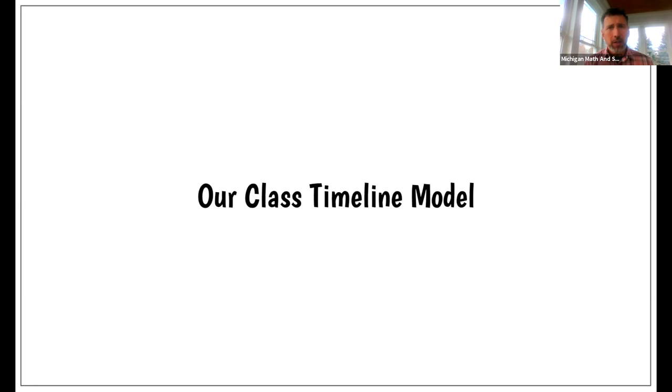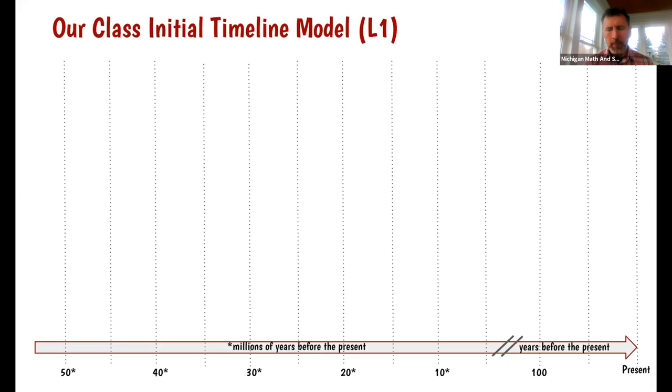This is our first attempt at making a class timeline model, and this is in lesson one. It's called our class initial timeline model. Let's take everything we know so far about penguins to build a timeline that shows when they lived. At the bottom of our model, notice most of the timeline is in millions of years before the present. On the right of the break in the timeline, notice it shifts to years before the present.